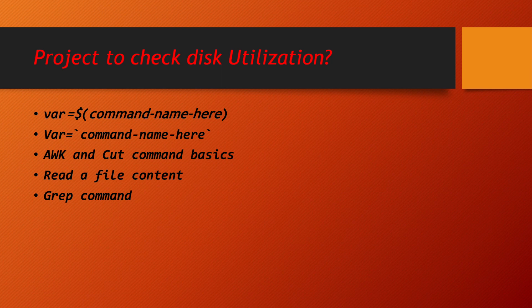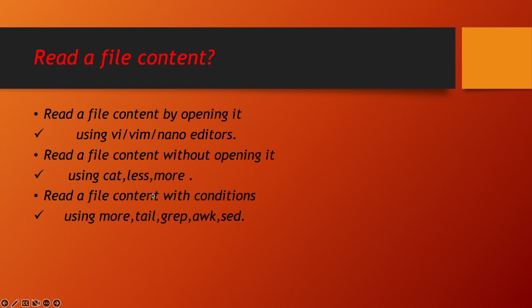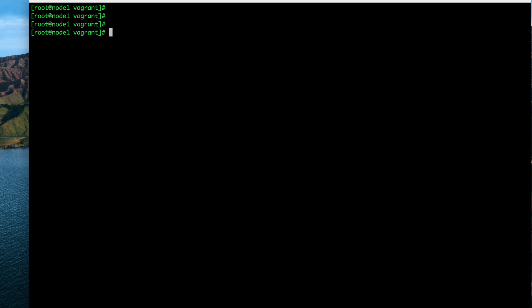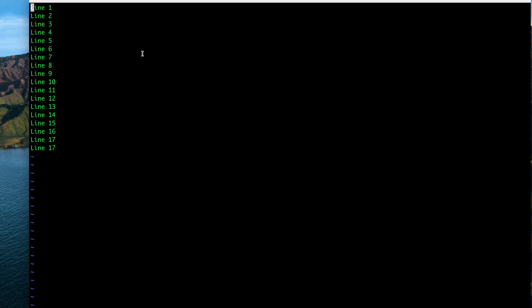Apart from that, we will be learning awk and cut command basics, how to read a file content, and the use of the grep command. The first method to read file content is using vi, vim, or nano editor. Using the vi command, you can open a file — for example, a file with 17 lines. The syntax is: vi your-filename.